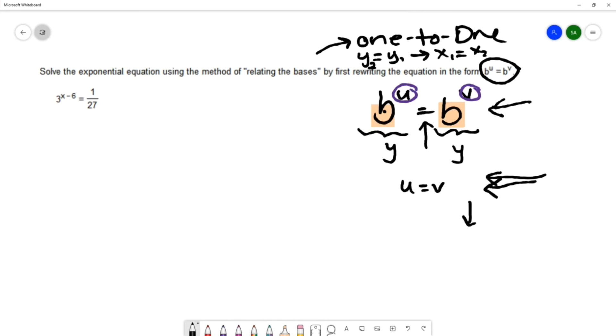So our equation is 3 to the x minus 6 equals 1 over 27. Our first challenge is writing the equation in this format. We want to have the bases match each other. I have a base on the left of 3, and I'm going to try to write the right-hand side with a base of 3.